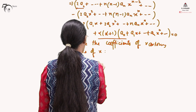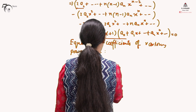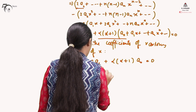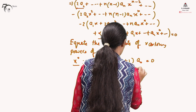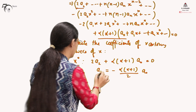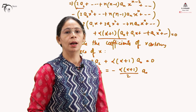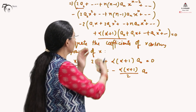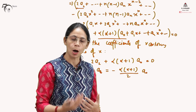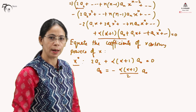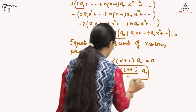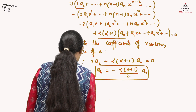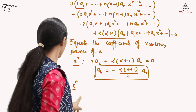Equating the coefficient of x raised to the power 0 gives us: 2a_2 plus alpha(alpha+1) a_0 equals 0, so a_2 equals minus alpha(alpha+1) divided by 2, times a_0. As noted in the previous videos, the drawback of term-by-term equating is that we need to equate n number of times; equating the coefficient of x raised to the power 0 gives only one constant. Equating the coefficient of x raised to the power n gives the recurrence relation.